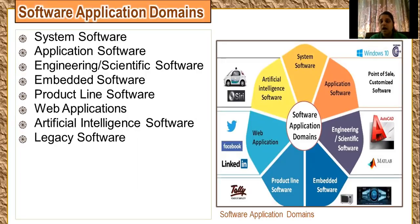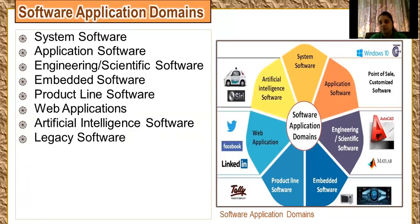Next is artificial intelligence software. An example is Alexa. These are intelligent softwares that help you understand and work like humans. Whatever orders you give them they will follow. You also know about Siri, another intelligent assistant.